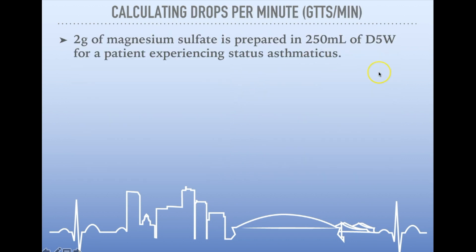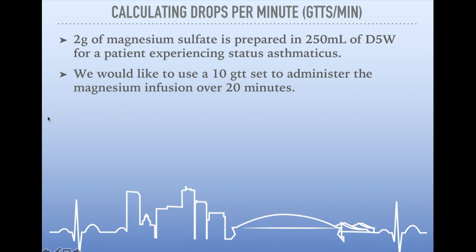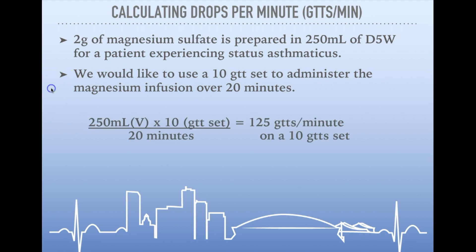Let's look at a couple of practice problems. For this problem, we have a 2-gram infusion of magnesium prepared in 250 milliliters of D5W for a patient experiencing status asthmaticus. We'd like to use a 10-drop set to administer the magnesium infusion over 20 minutes. Setting our formula up: 250 milliliters multiplied by 10 (our drop set), divided by 20 minutes — that gives us 125 drops per minute to deliver the magnesium infusion over 20 minutes on a 10-drop set.